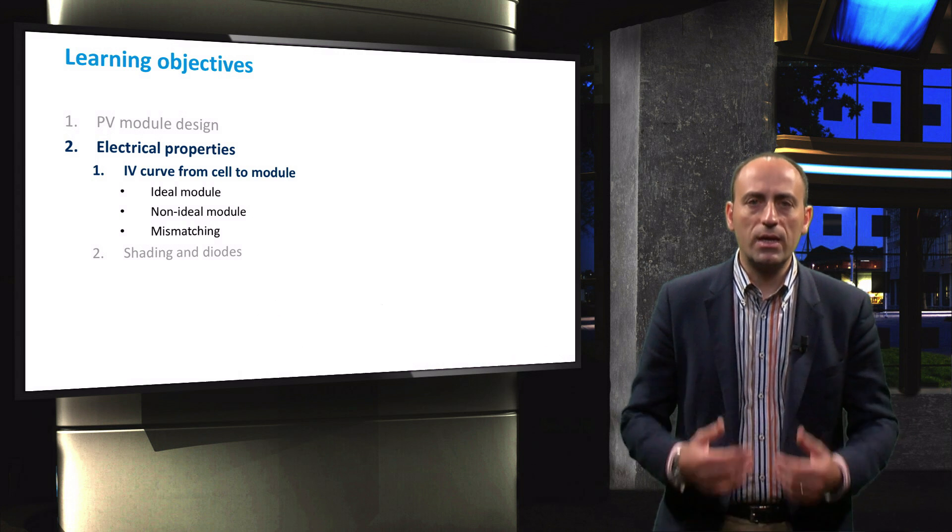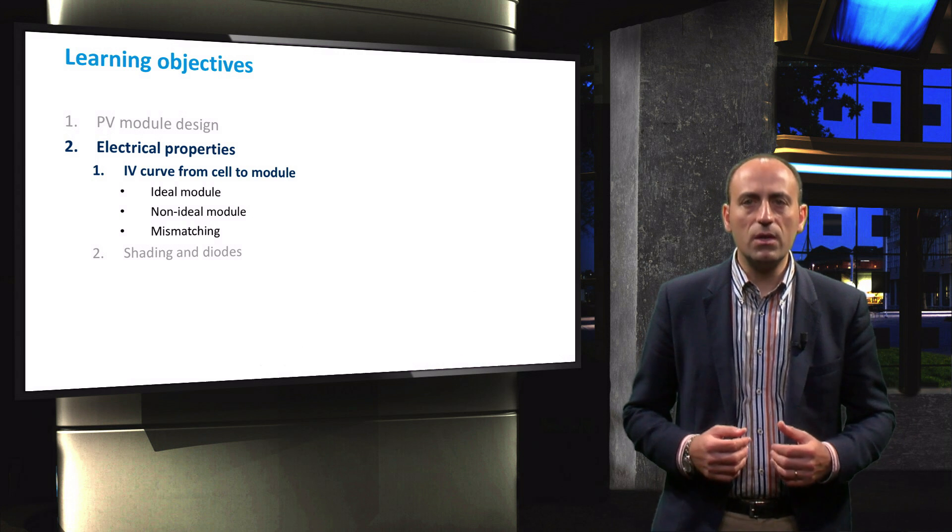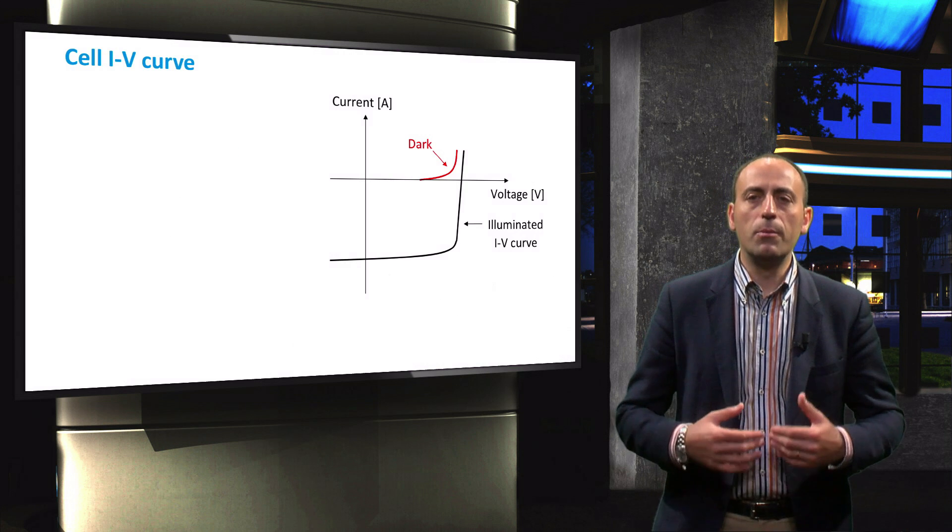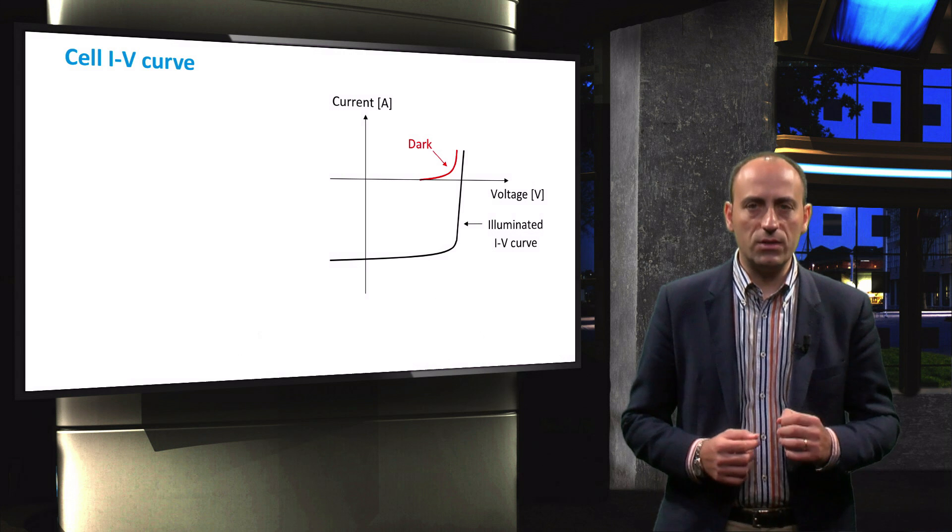Finally, we will discuss the various mismatch effects that affect a real module. Let's begin with the parameters that characterize a solar cell.